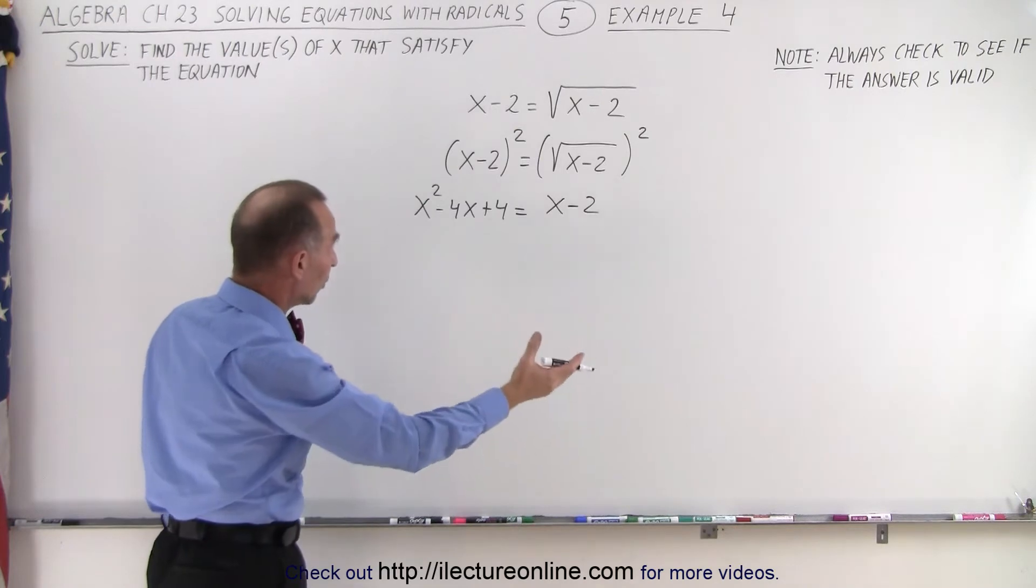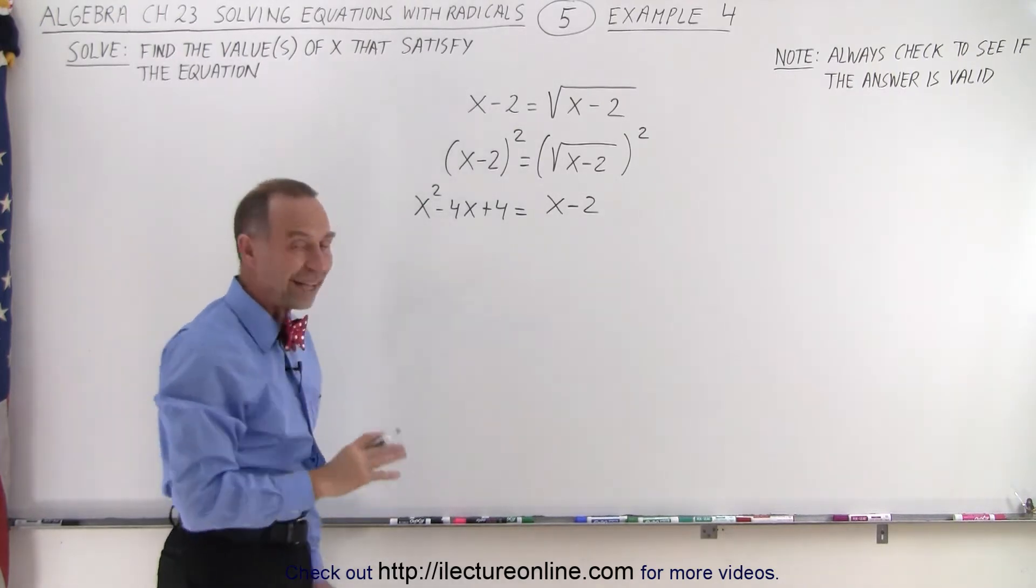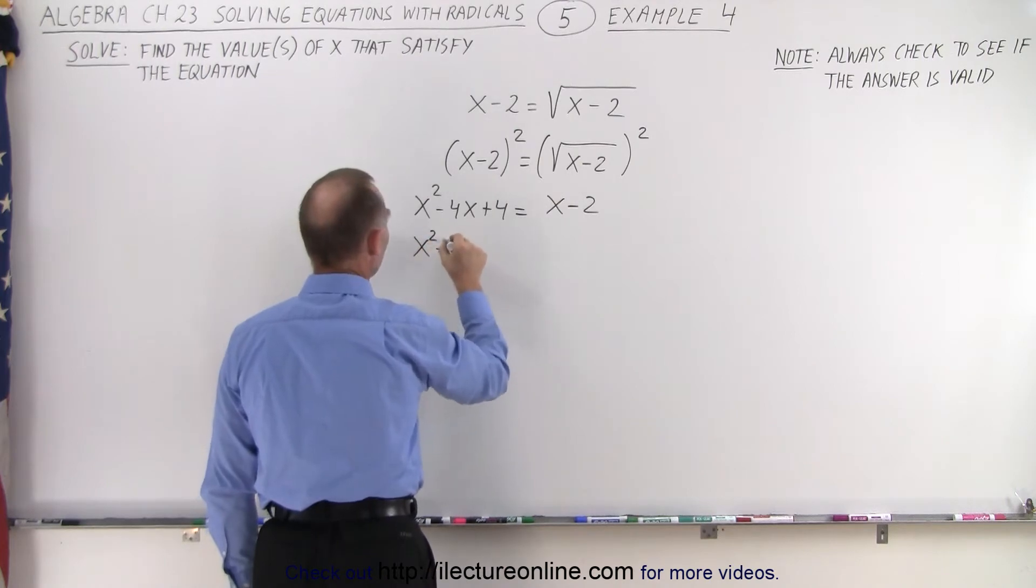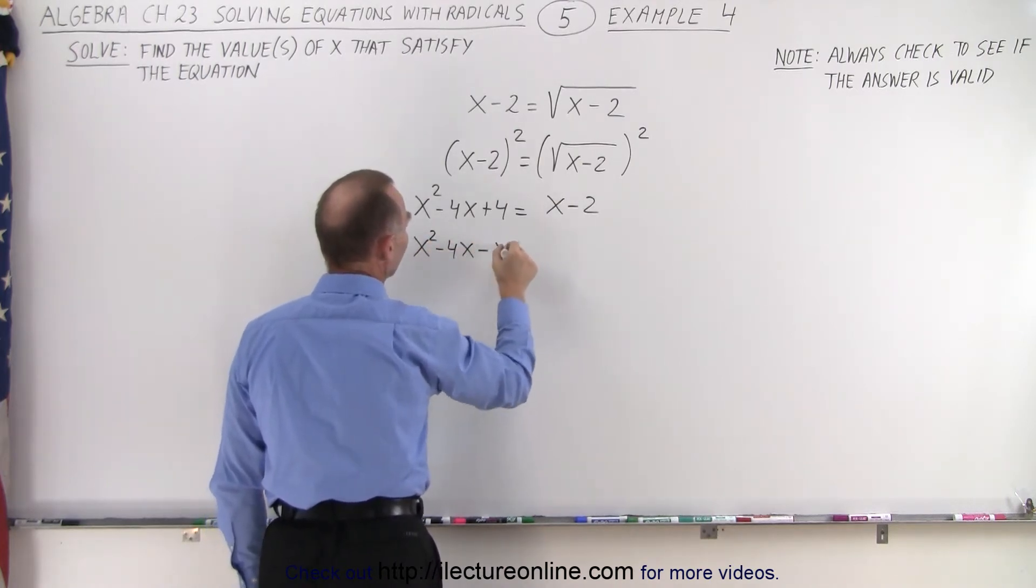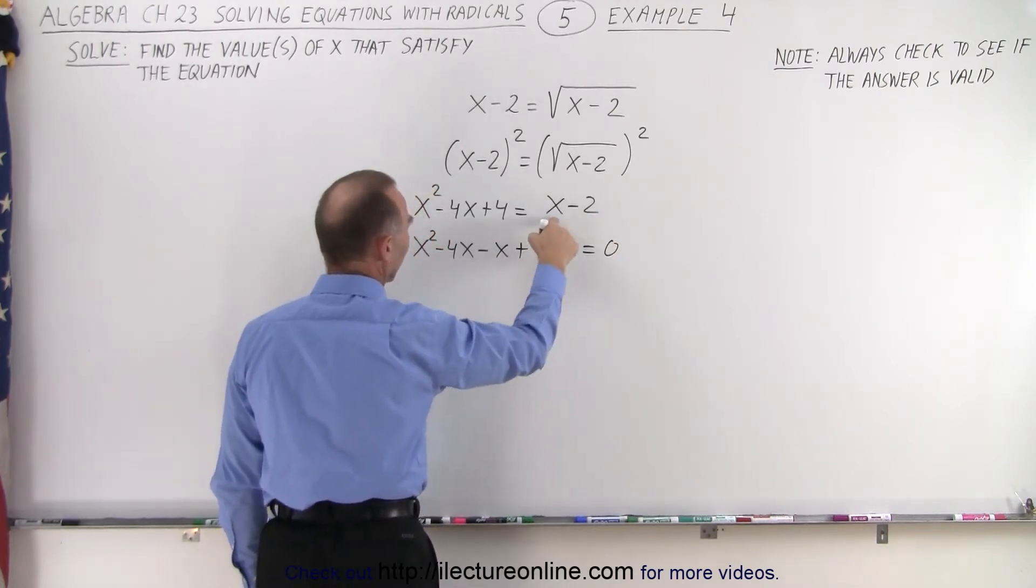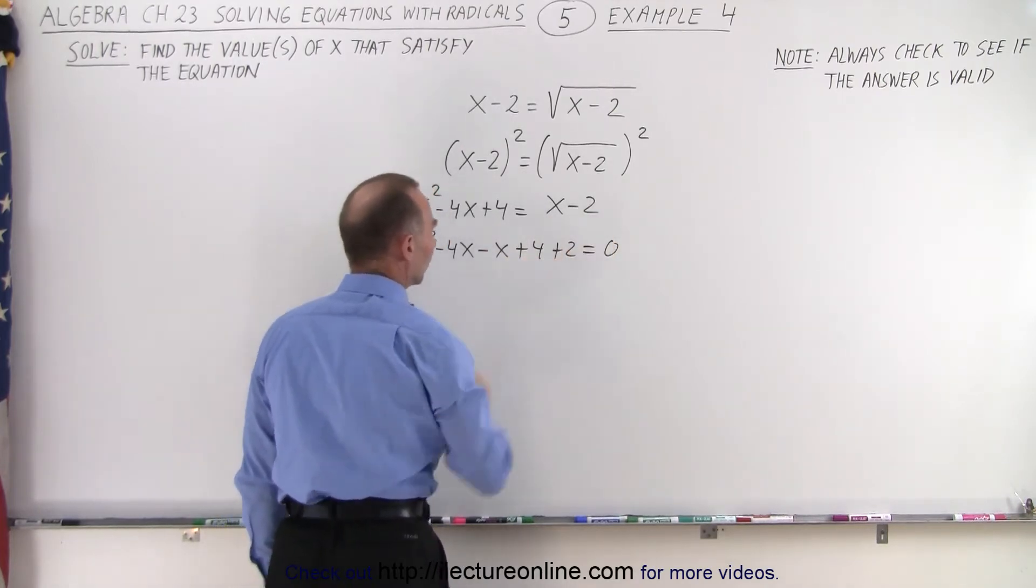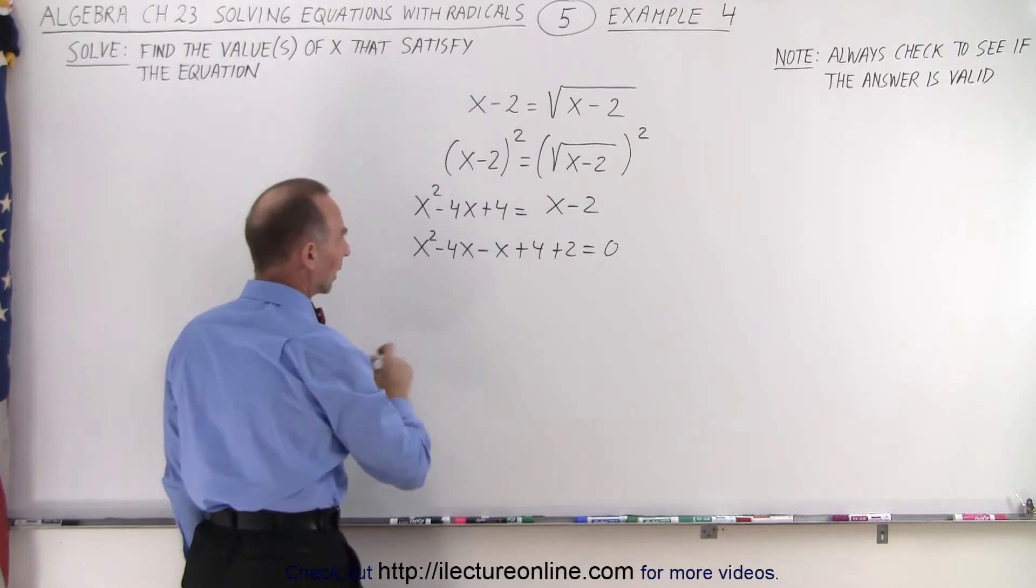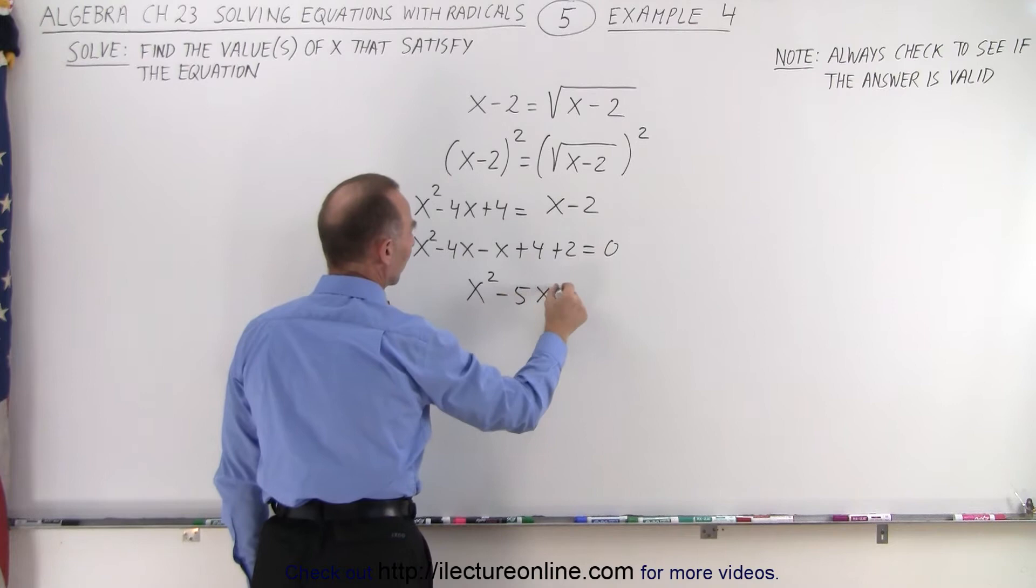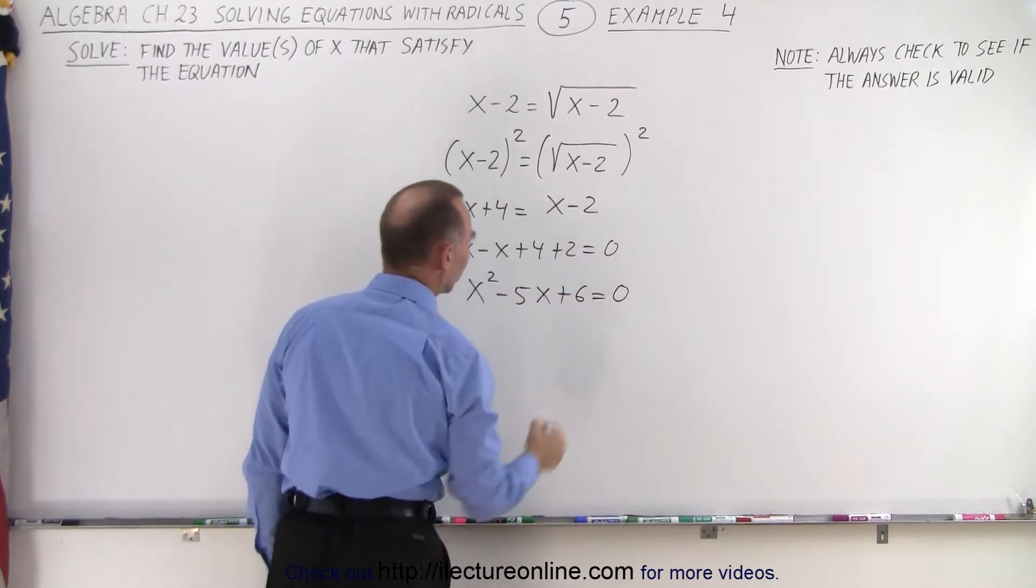And right away we see that we're going to end up with a quadratic equation. We simply have to move everything over to the left side and set it equal to 0. So that gives us x squared minus 4x minus x plus 4 plus 2 equals 0. By moving these two across, the x becomes minus x, the negative 2 becomes a plus 2.